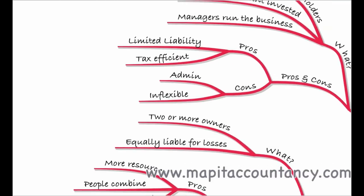It's also inflexible. Once you've set up a limited company, if there are shareholders who aren't the actual people running the business, they can perhaps stop the people who are running the business from doing what they want to do. This can be a good thing as it protects their investment, but it can also be a bad thing as it makes the company less flexible. So those are our three choices for business entities. The big drawback for sole traders and partnerships is unlimited liability; for a limited company, the benefit is that you limit liability to the amount you have invested.